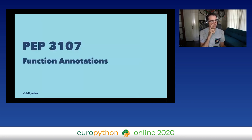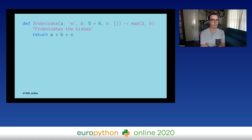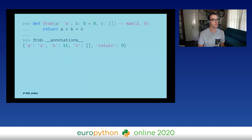In 2006, we have PEP 3107, which came out in Python 3 and allowed us to do something called function annotations. It allows us to take a function and add basically any metadata we want — annotating arguments and return values. The important thing to know is that this has zero effect on execution of the function, but it gives us a nice little `__annotations__` attribute on the function — a dict based on the variable and return type.